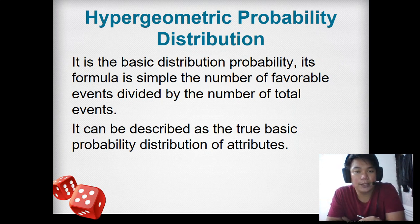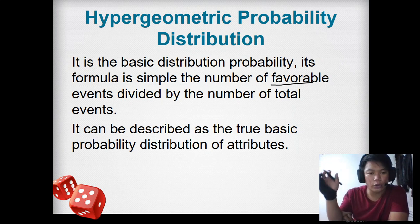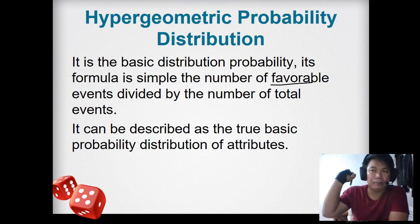One type of probability distribution is hypergeometric. It is the basic distribution probability. Its formula is simple: the number of favorable events divided by the number of total events. Favorable means the success part.